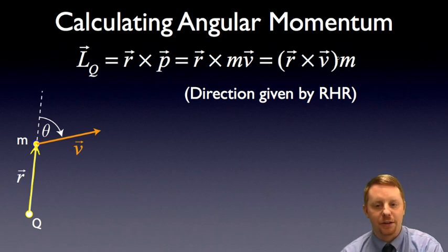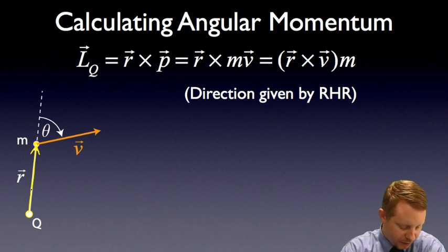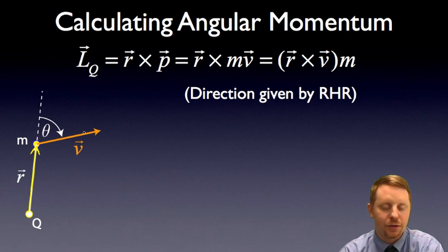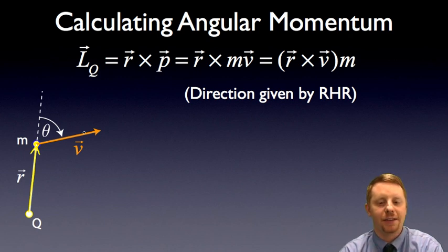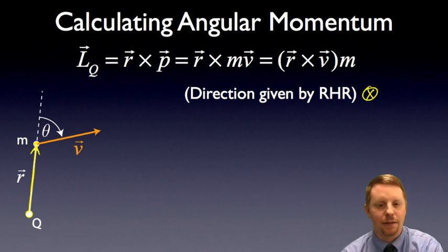The direction of this vector we can find using the right-hand rule. Point the fingers of your right hand in the direction of r, bend them in the direction of v, and your thumb will point in the direction of the positive angular momentum vector. In this case, that would be into the plane of the screen.